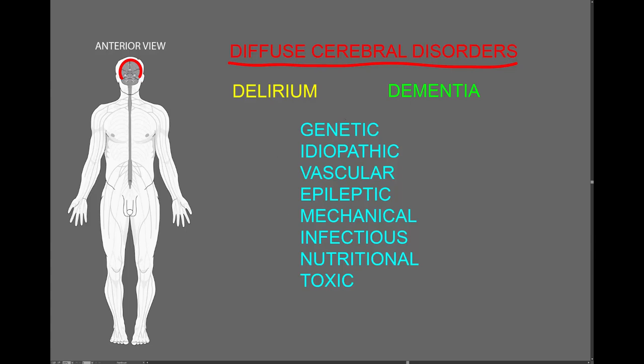Several genetic disorders may cause diffuse cerebral cortical dysfunction, such as one called Huntington's disease, which often causes dementia from diffuse loss of cerebral cortical neurons. This also occurs with the idiopathic disorder Alzheimer's disease, which is the most common cause of dementia.